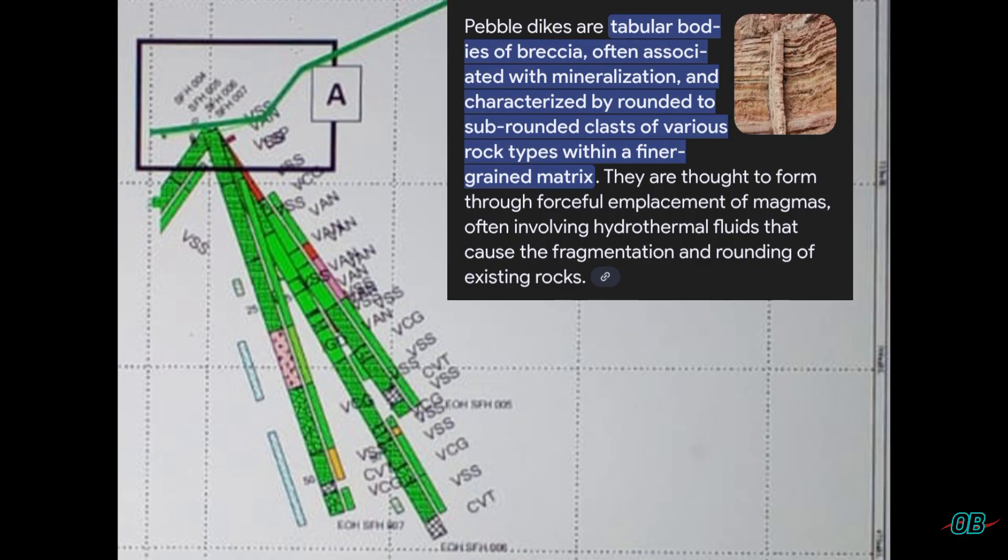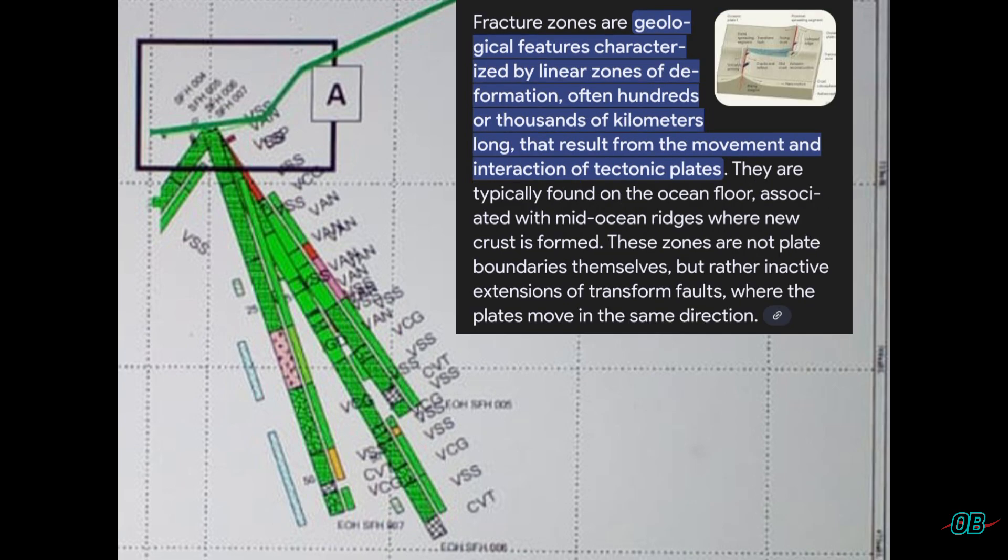Fracture zones can be interpreted on different scales, such as meters, kilometers, and even centimeters. These zones are indicative of tectonic movement, such as fault movement itself.